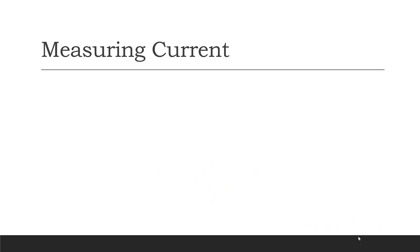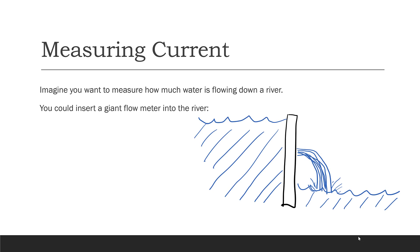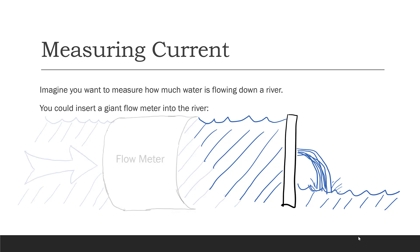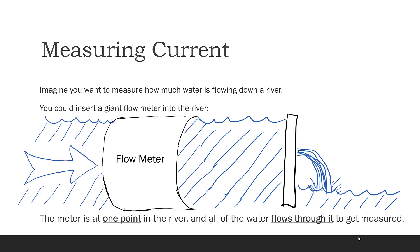Now let's talk about measuring current. Imagine that you had water flowing down a river and you wanted to measure how much water was flowing. One way to make this measurement is to insert a giant flow meter into the river. The meter is inserted at one point in the river, and all of the water has to flow through the meter in order to get measured.